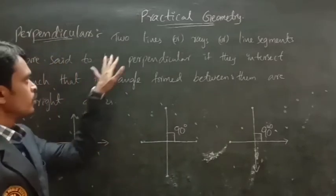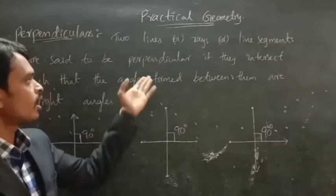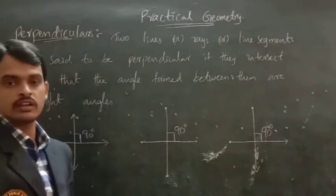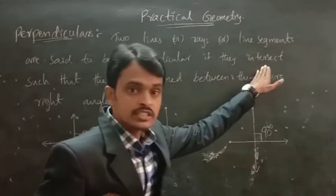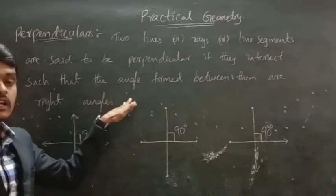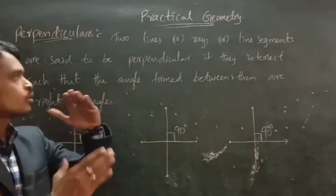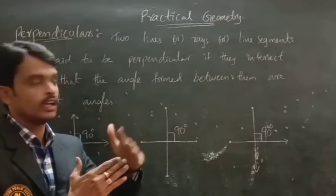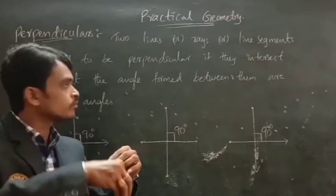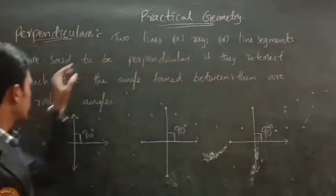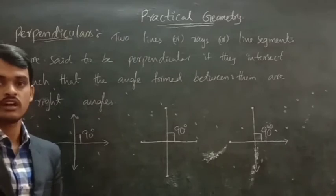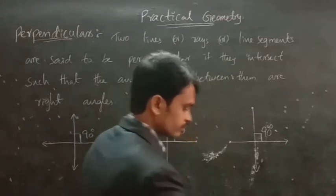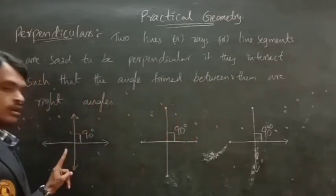Two lines or two rays or two line segments are said to be perpendicular if they intersect such that the angle formed when the two rays or two lines or two line segments intersect — the angle formed between them are right angles — they are called perpendiculars. So, look at here: two lines.